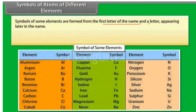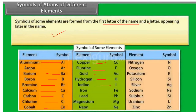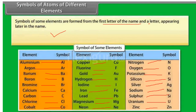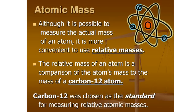So whatever symbolic form you see — if it is one letter, it is denoted by a capital letter; if two letters, the first is capital and the second is small. The symbols of some elements: aluminium Al, argon Ar, barium Ba, boron B, bromine Br, calcium Ca, carbon C, chlorine Cl, cobalt Co, copper Cu, fluorine F, gold Au, hydrogen H, iodine I, iron Fe, lead Pb, magnesium Mg, neon Ne, nitrogen N, oxygen O, potassium K, silicon Si, silver Ag, sodium Na, sulfur S, uranium U, and zinc Zn.